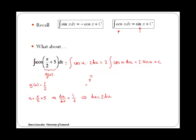And if we bring our x back then the answer would be 2 sin of x over 2 plus 5 plus the constant of integration.